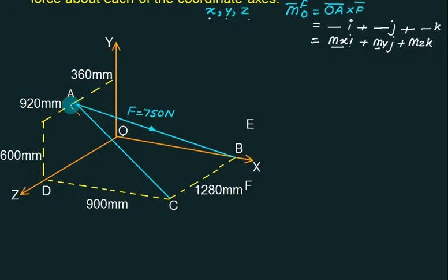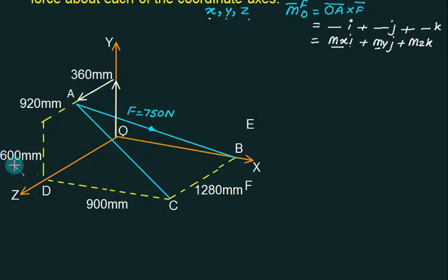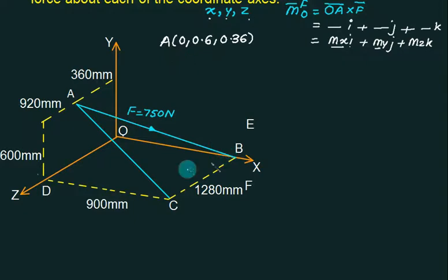Now let's find the coordinates of point A. The distance along the Z axis is 0.36 and along Y is 0.6, so A = (0, 0.6, 0.36). For point B: the distance is 0.9 and it lies on the X axis, so B = (0.9, 0, 0).